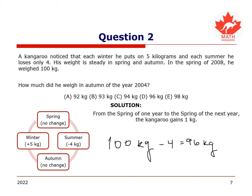However, we are interested in the kangaroo's weight two seasons later, in the autumn of 2004. In the summer of 2004, the kangaroo lost 4 kg, so in the autumn of 2004, he was 96 minus 4 equals 92 kg. Hence, the weight of the kangaroo in the autumn of 2004 was 92 kg.